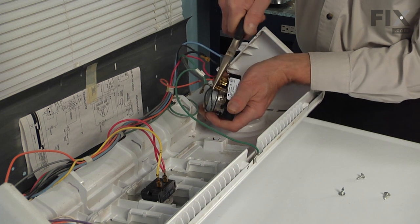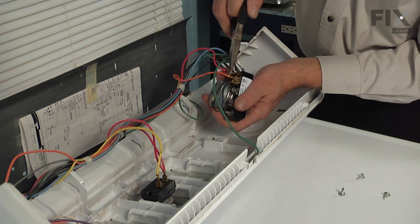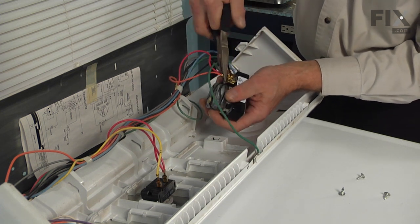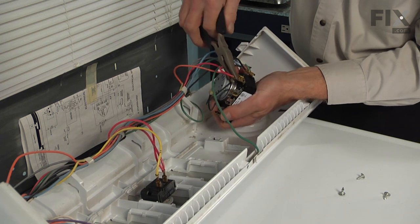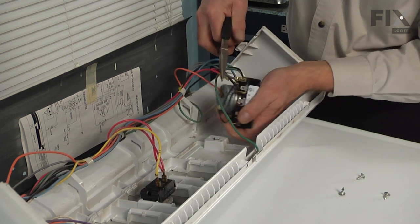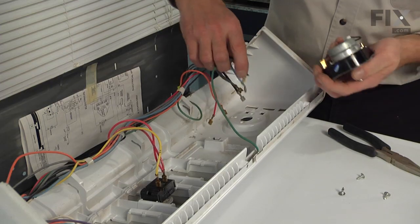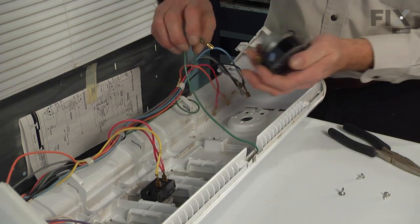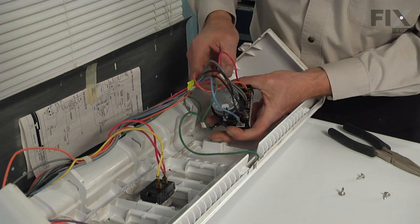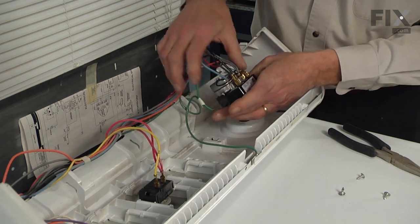If they're on there pretty snug, take your needle nose pliers and just pull them directly off of the terminals. We'll discard the old timer and now we can go ahead and put the new timer in, so we're just going to reconnect all of the wires in the proper places, including the ground wire.